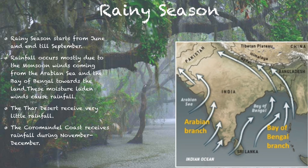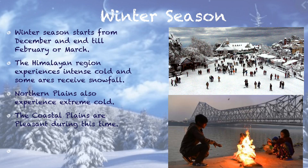The rainy season starts from June and ends in September. Rainfall occurs in India mostly due to the monsoon winds coming from the Arabian Sea and the Bay of Bengal towards the land. These moisture-laden winds cause rainfall. The Thar Desert receives very little rainfall. The Coromandel Coast receives rainfall during November and December.